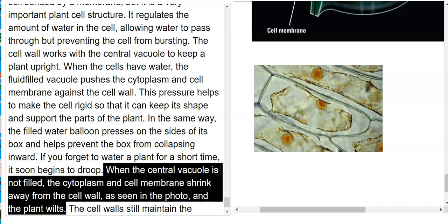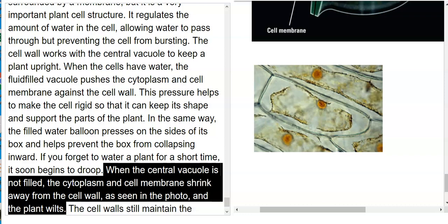When the central vacuole is not filled, the cytoplasm and cell membranes shrink away from the cell wall, as seen in this photo, and the plant wilts. The cell wall still maintains the shape of the cell so that the plant is able to pop right back up again when it's watered, as long as the cells have not died.